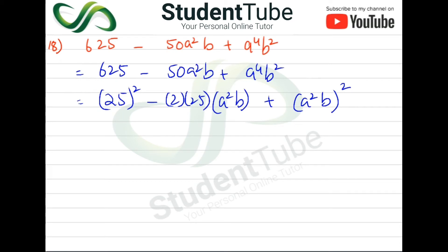As we know that (A - B)² is equal to A² minus 2AB plus B². Okay? So here it becomes (25 - A²B)² and the whole square is the answer.